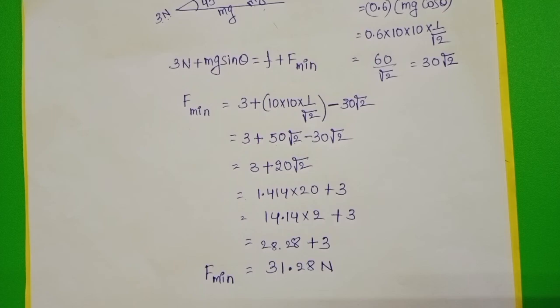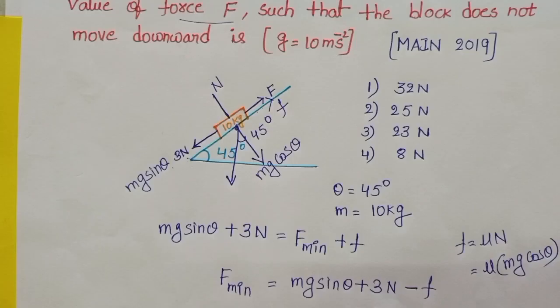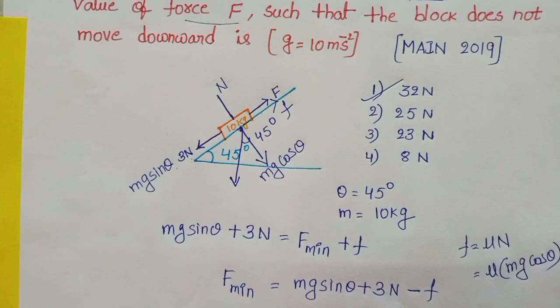28.24. The minimum force required to get the equilibrium position of the block is 31.28 N. Check the given options. So 31.28 N is approximately equal to 32 N. First option is correct.